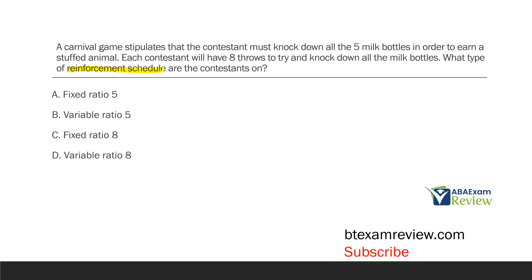Fixed and variable has to do with the amount required — does it stay constant or is it changing? Ratios have to do with responses; intervals have to do with time. Is it a ratio or is it an interval? The carnival game says the contestant must knock down all five milk bottles to earn the stuffed animal. To get reinforcement, they need to engage in the correct response of knocking down milk bottles five times. So we know this is going to be a ratio schedule.